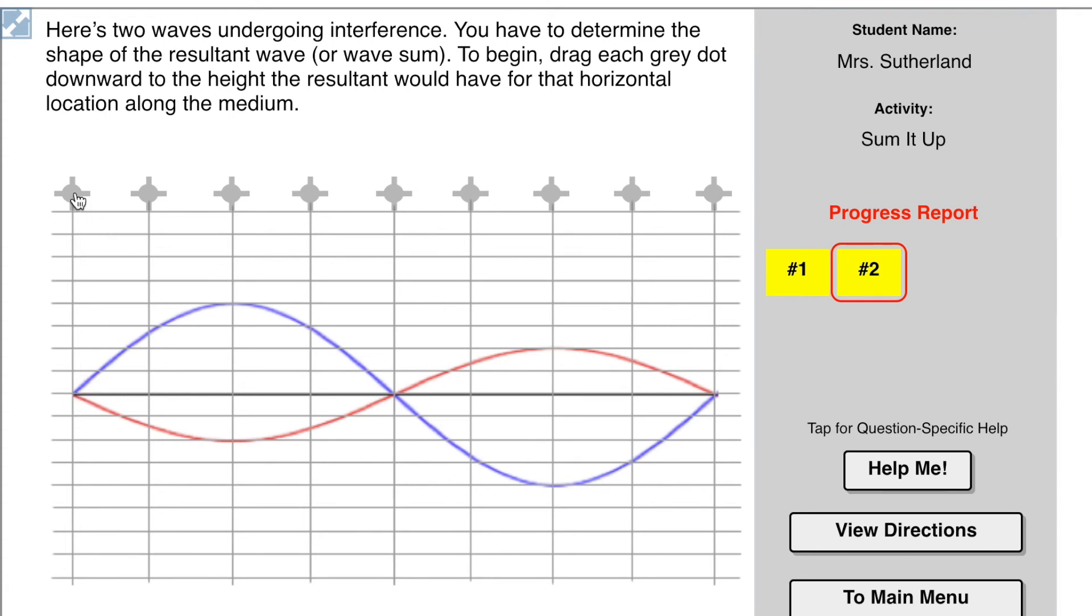So here we've got 0 plus 0, which is 0. Here we have 1, 2, 2 and a half, and 1 and a half. So that means I have to take this 2 and a half and subtract 1 and a half from it. Because this is basically positive 2 and a half plus negative 1 and a half.